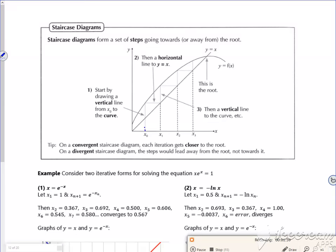So start off at x1 there. So up to the curve. Can't spell curve. Across to y equals x. So up to the curve. Across to y equals x. So up to the curve. Across to y equals x. And keep on repeating that.